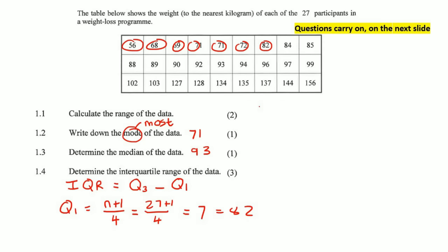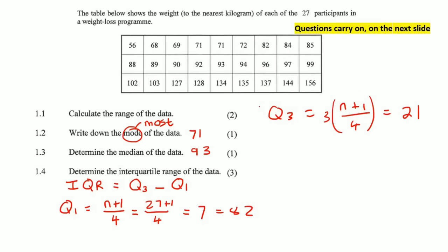The formula for Q3 is 3(n+1)/4. Working that out gives position 21, which corresponds to the value 127. So the interquartile range is 127 minus 82, which equals 45.